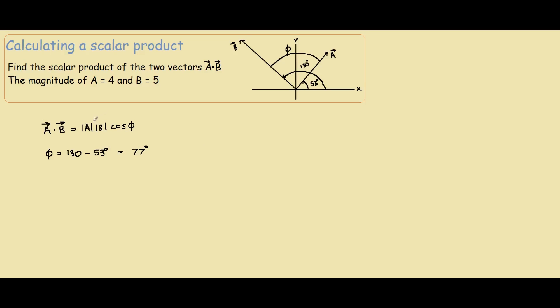We know the magnitudes of A and B are given. Magnitude of A equals 4, magnitude of B equals 5.